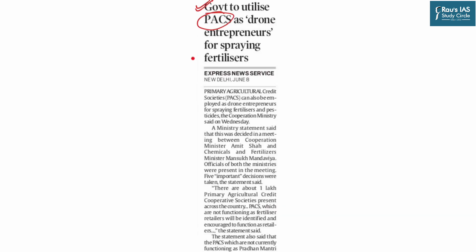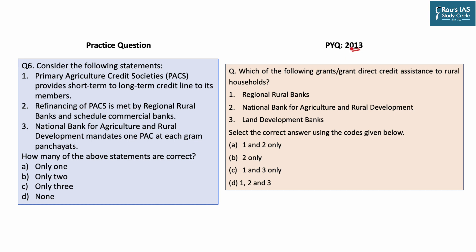This article of the Indian Express was published on page 10 and talks about an important agricultural credit society known as PACS or Primary Agricultural Credit Society, on which we have framed a question. In 2013, a direct question was asked with respect to credit assistance to rural households in which RRBs, NABARD, and land banks were asked. Statement 1: Primary Agricultural Credit Societies provide short-term to long-term credit to its members. This statement is incorrect — they can only provide short-term to medium-term loans, not a loan for 10 years.